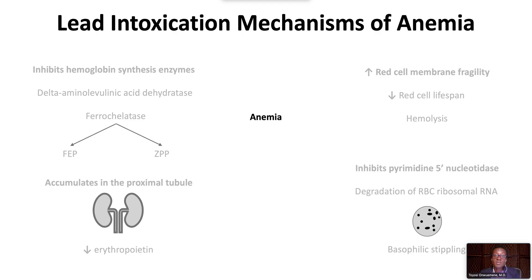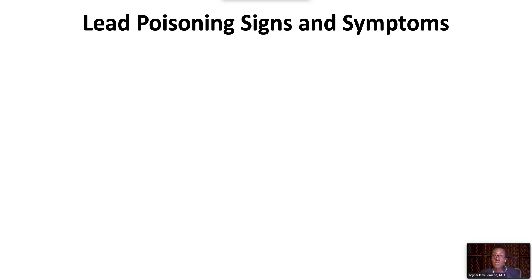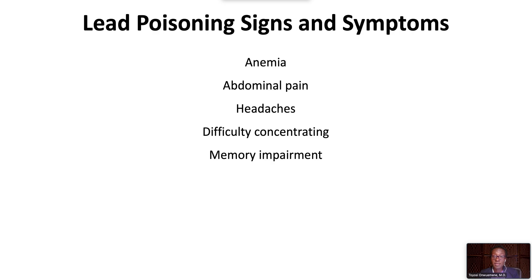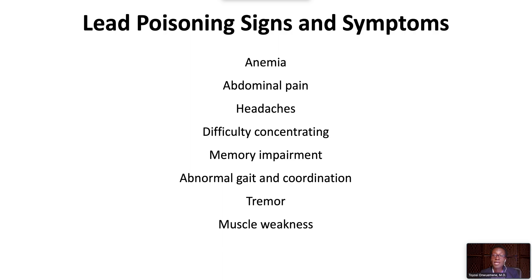The anemia due to lead intoxication is normocytic and normochromic, and the peripheral blood film might show basophilic stippling. Lead poisoning often presents with nonspecific signs and symptoms, including anemia, nonspecific abdominal pain, headaches, difficulty concentrating, memory impairment, abnormal gait and coordination, tremor, and muscle weakness, especially of extensor muscle groups. Although rarely present, there may be a lead line at the gum-tooth interface, which is a bluish gingival pigmentation due to a reaction of lead with bacteria in dental plaque that causes formation of lead sulfide.